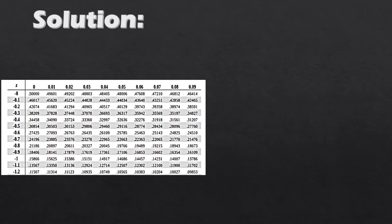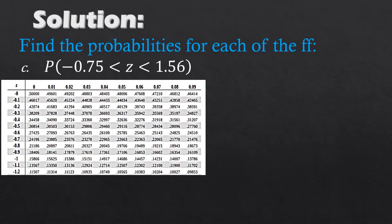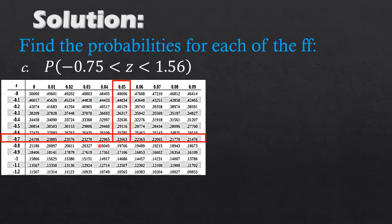For the third problem, we have P(z) such that it's greater than negative 0.75 and less than 1.56. We look at the negative z-table for the negative z score. We have negative 0.7 plus 0.05.